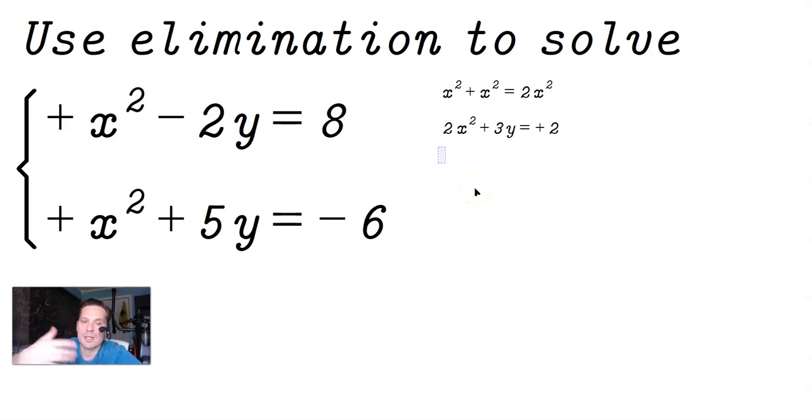So what you want to do then is just multiply one of the equations by negative 1, just one of them, doesn't matter which one essentially. So multiply the top equation by negative 1, you're going to have x squared minus 2y is equal to 8. Change the sign, so it's going to give you negative x squared plus 2y is equal to negative 8.